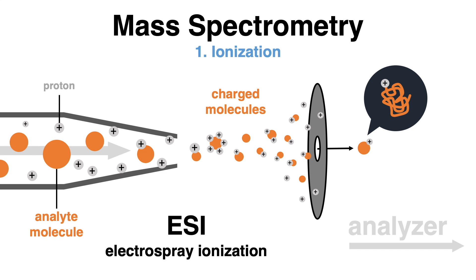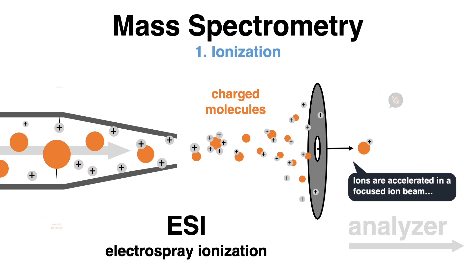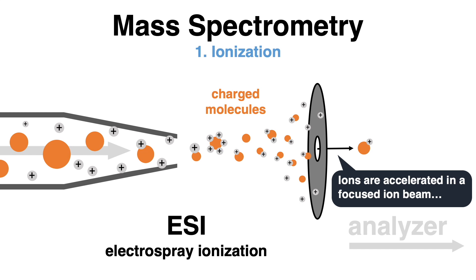The sample is passed through a capillary with an applied electric field. Electrostatic repulsion of ions and other physical effects causes a fine aerosol that eventually evaporates, resulting in charged gas-phase ions. After ionization, the ions pass through tiny slits in the mass spectrometer and are accelerated in a focused ion beam using an electric field.